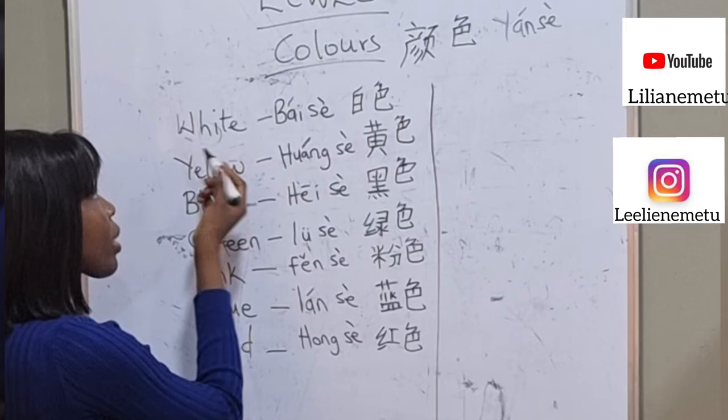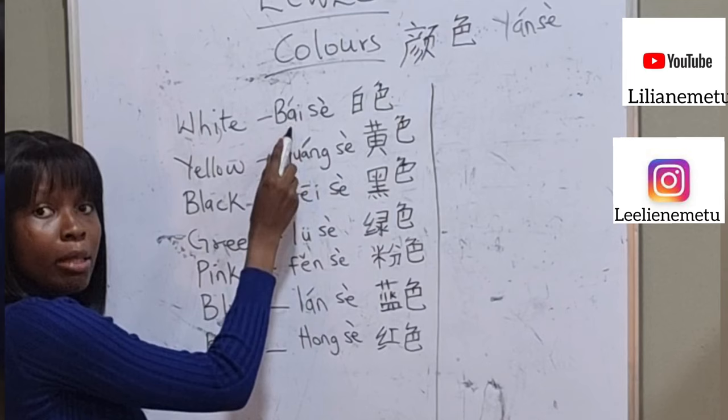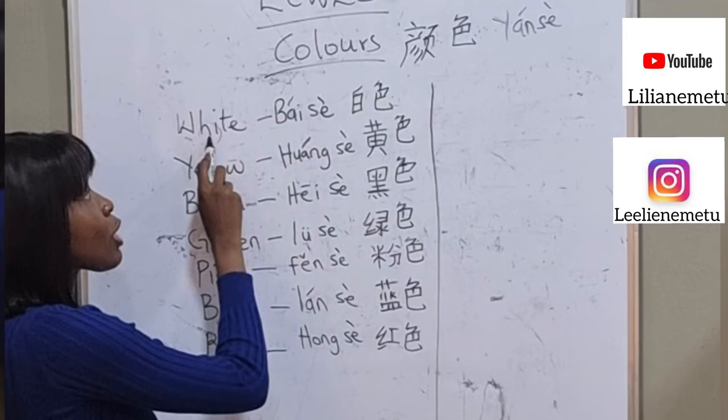So the first color we have is white. White is called 'bái sè.' Remember we have the pinyin pronunciation part, and we have the character. So white is pronounced bái sè — this is the character bái sè.